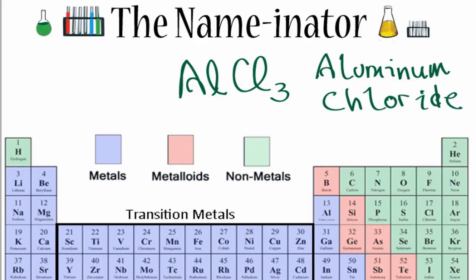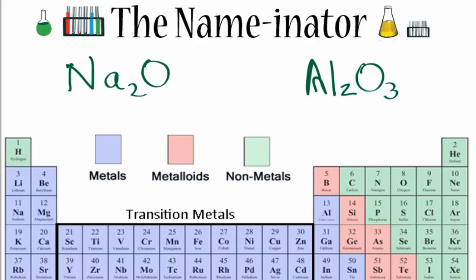So to name these binary ionic compounds, we write the metal as it is on the periodic table, and then for the nonmetal, we write it out but change the ending to I-D-E. Pause for a moment and try these. For Na2O, that's sodium oxide. Al2O3 is aluminum oxide.